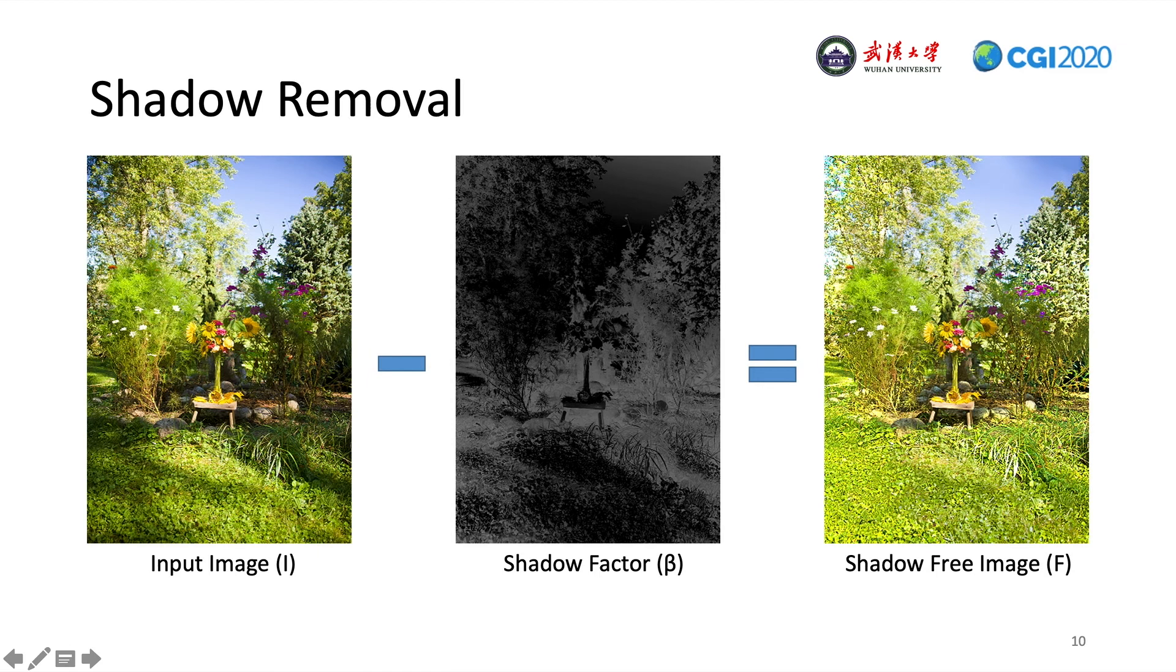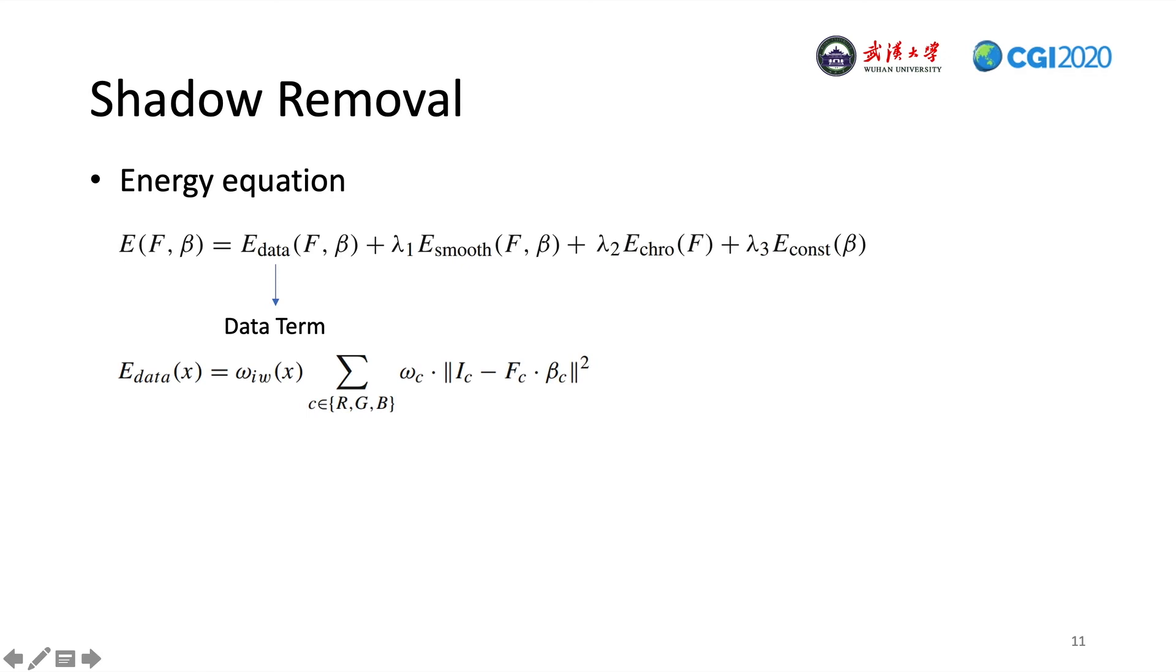We can get a shadow-free image by reducing the shadow part in the input image. To estimate the shadow-free image and corresponding shadow factor, we propose the following energy equation for shadow removal. This energy model contains four terms.